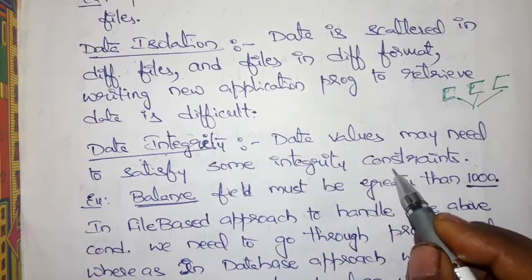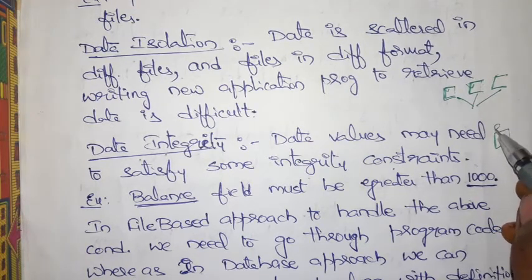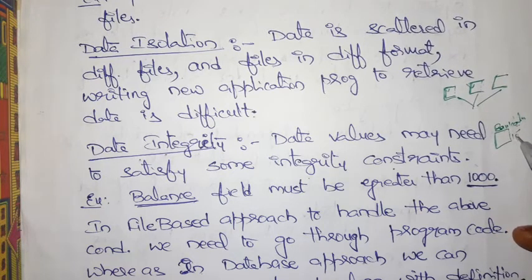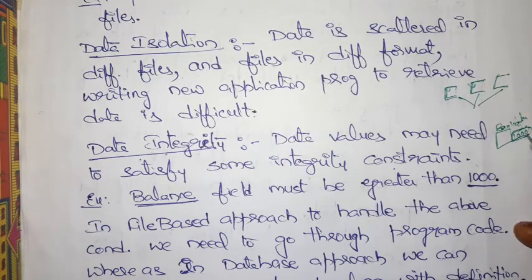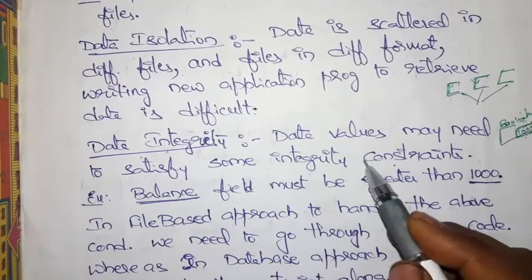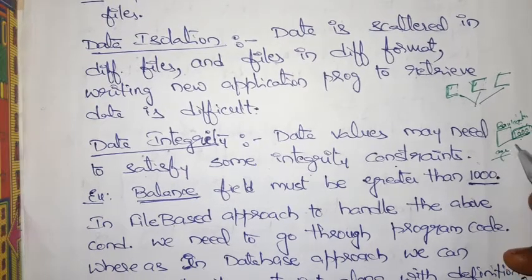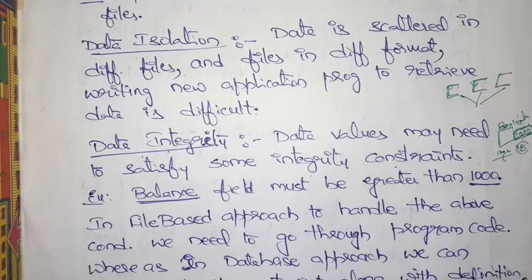Next is data integrity. Data values may need to satisfy some integrity constraint. For example, in a bank database, the balance attribute may have an integrity constraint that each customer should have a minimum balance of one thousand rupees. Similarly, in an application form, age should be at least 18 years. Each and every data value must satisfy some integrity constraint.